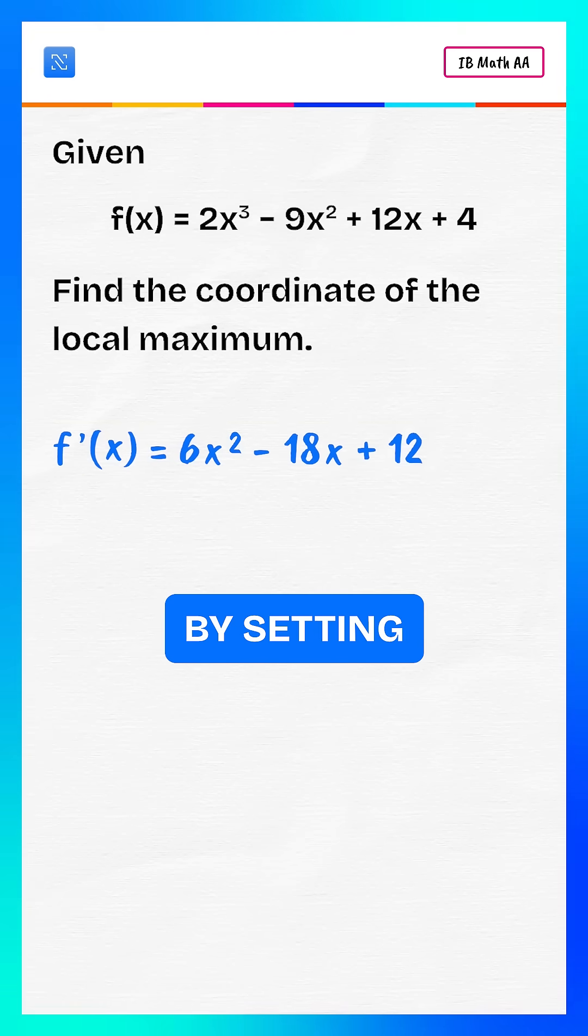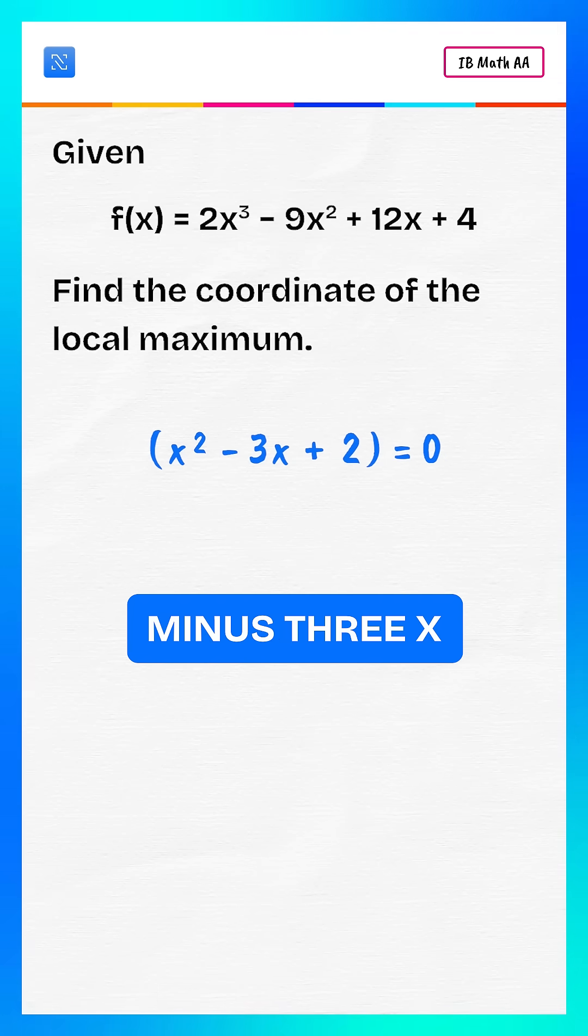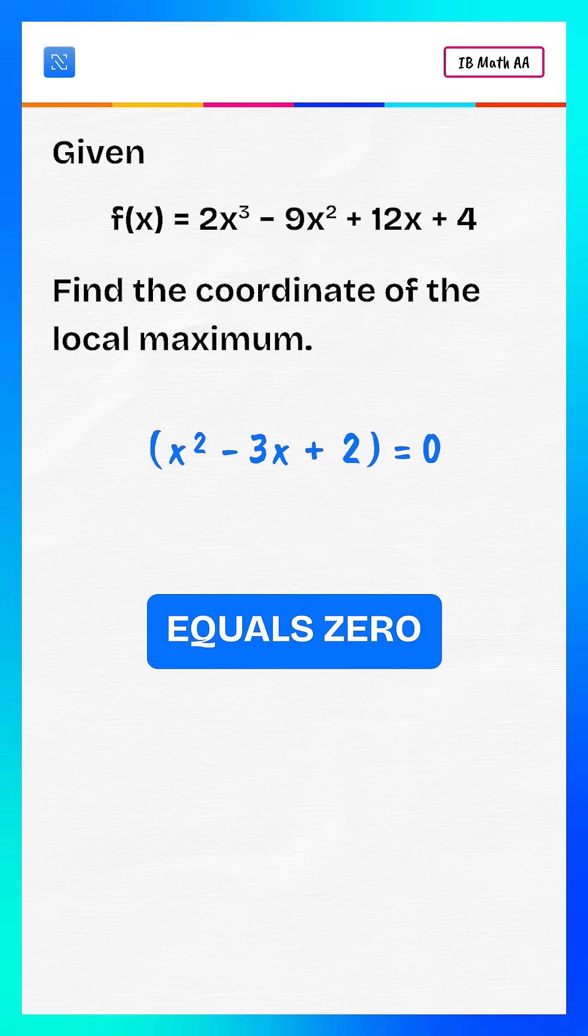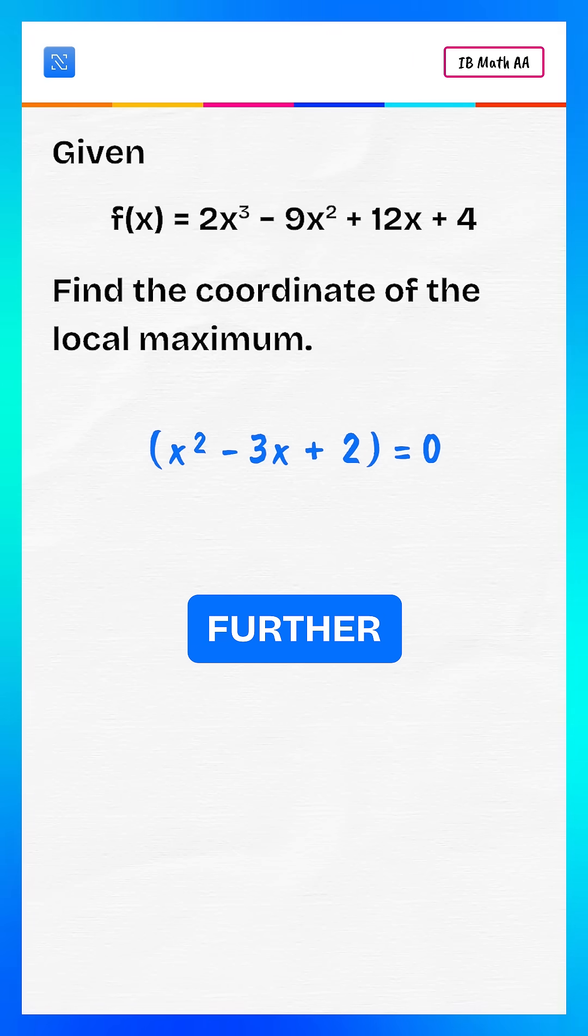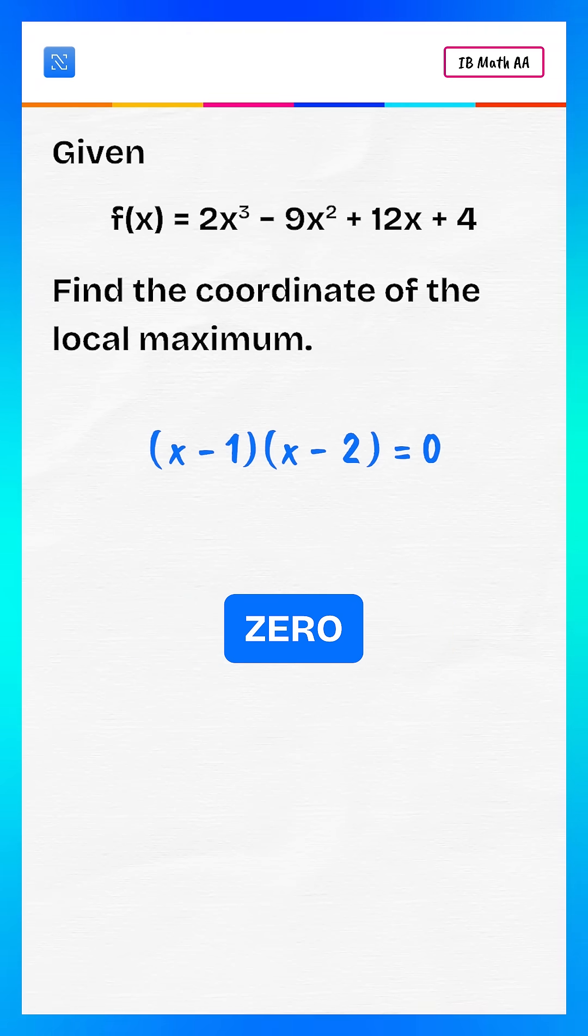we find the critical points by setting the derivative equal to 0. Factor out 6. x² minus 3x plus 2 equals 0. Factorizing further, x minus 1 multiplied by x minus 2 equals 0.